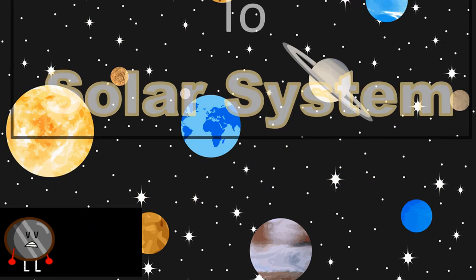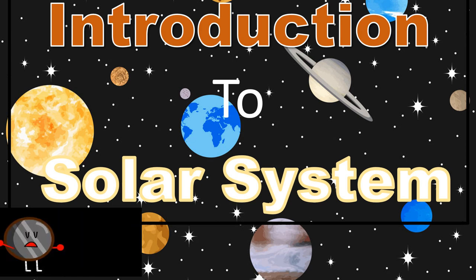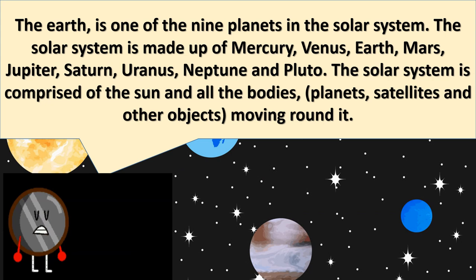Introduction to the solar system. The Earth is one of the nine planets in the solar system. The solar system is made up of Mercury, Venus, Earth, Mars, Jupiter, Saturn, Uranus, Neptune and Pluto. The solar system is comprised of the sun and all the bodies — planets, satellites, and other objects moving around it.